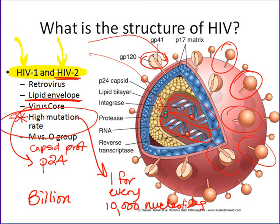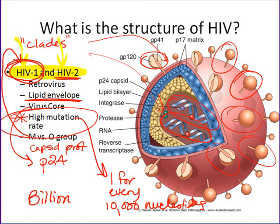Within the HIV-1 group or family, there are a bunch of subtypes called clades. There is the M — major — group, which is the big group, with a bunch of different subtypes within it going through A through J. The major group is the most common one; the outlier group is a less common version.